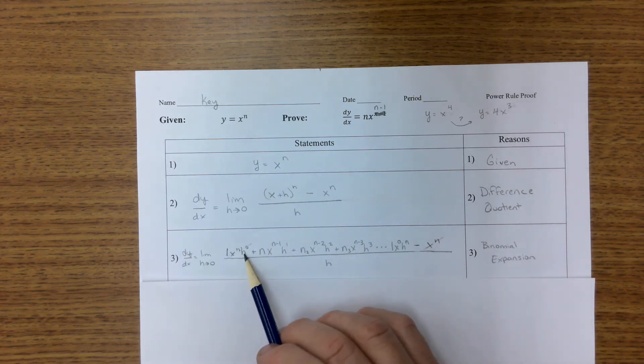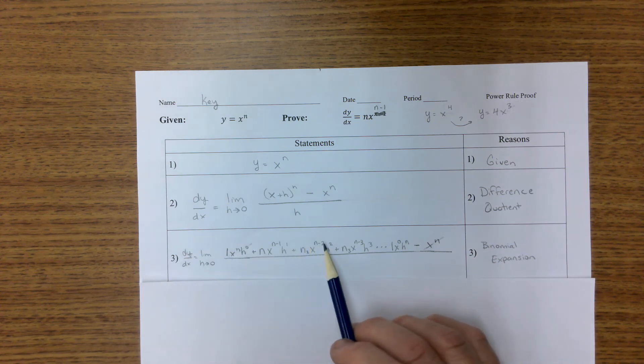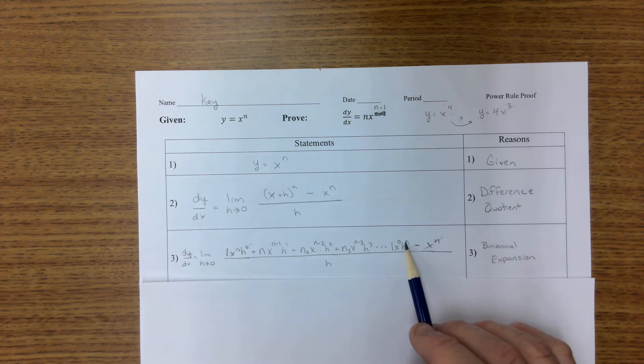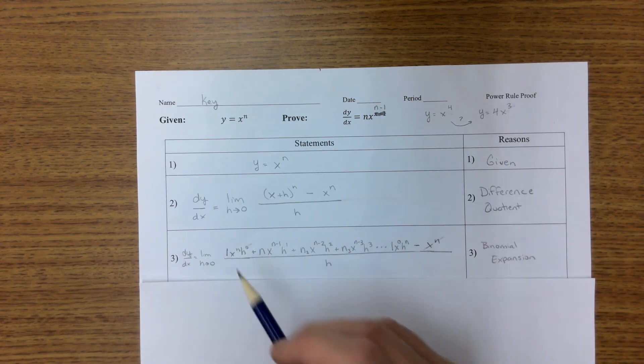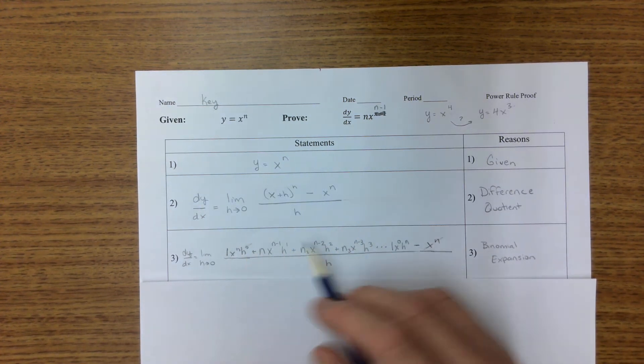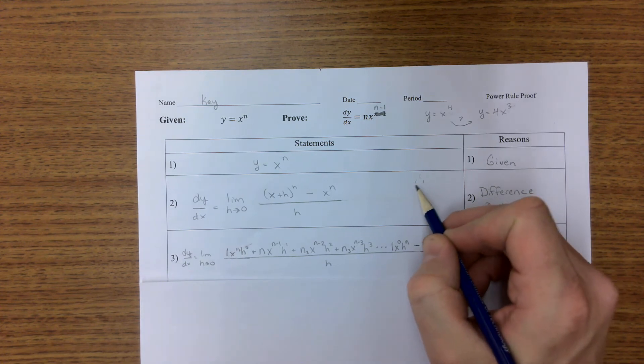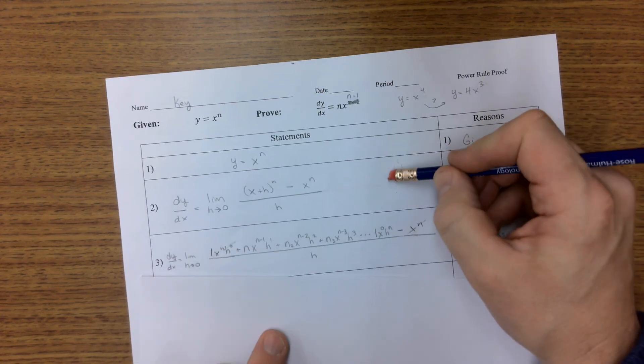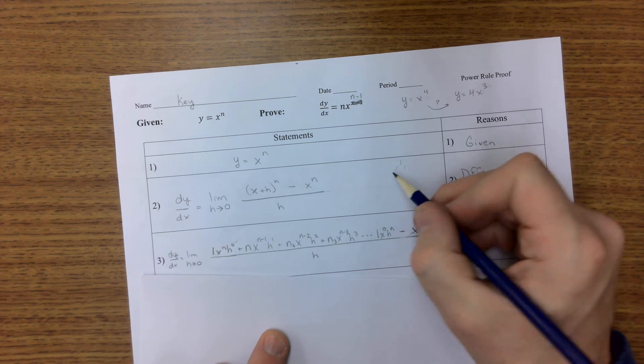And then what about the h's? Well the h's are h to the zero, h to the first, h to the second, h to the third, dot dot dot, h to the n, however far we need to count. Then the coefficients, the coefficients are found by Pascal's triangle.